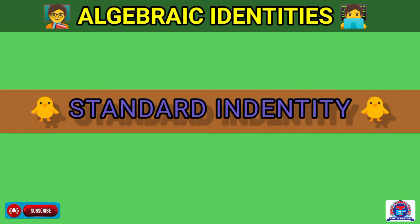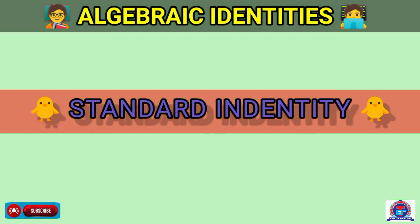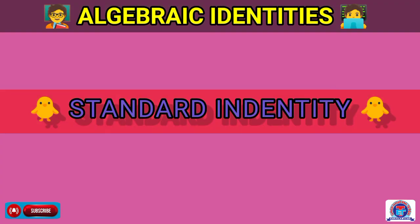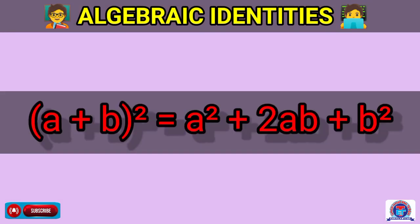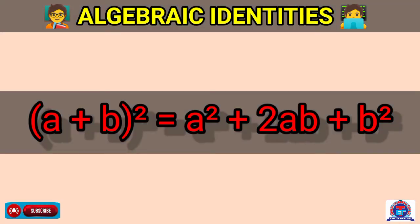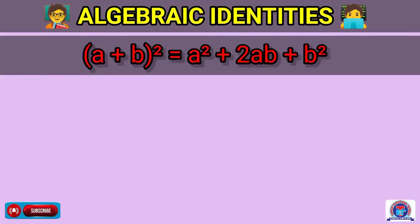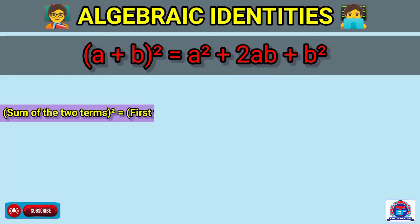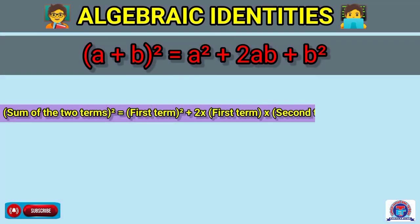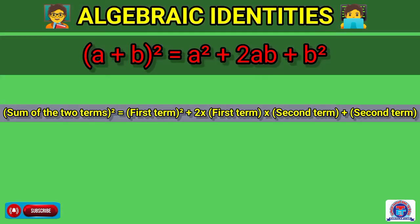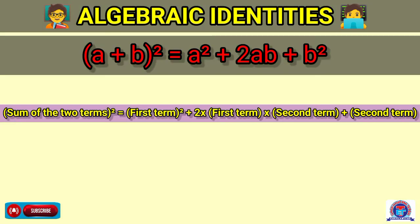Now we will understand the standard identity and how it is derived. The first identity is a plus b its whole square equal to a square plus 2ab plus b square. In other words, the sum of two terms its whole square is equal to the first term's whole square plus 2 into first term into second term plus the second term's whole square.